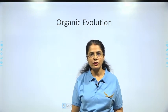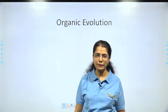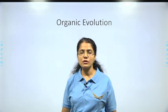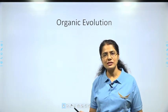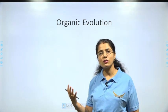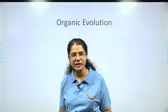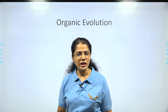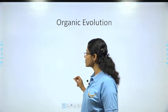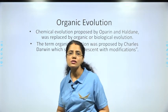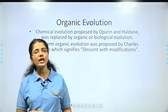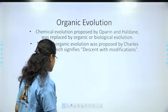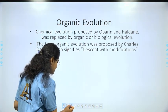The chemical evolution proposed by Operin and Helden was replaced by organic or biological evolution, because organic evolution tells us how the different complex life forms slowly and steadily came into existence. The term organic evolution was proposed by Charles Darwin, which signifies descent with modifications. This term is very important.